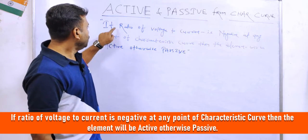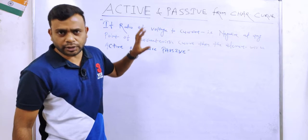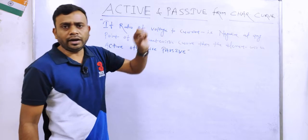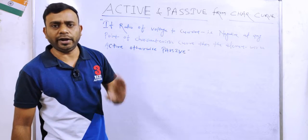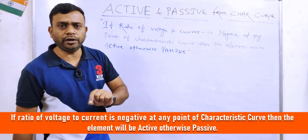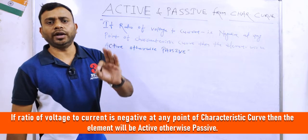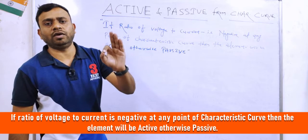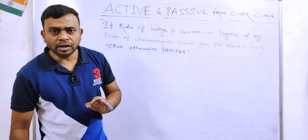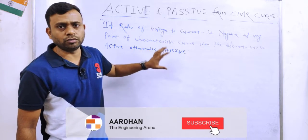क्या लिखा है? If ratio of voltage to current is negative — यदि voltage और current का ratio negative आ रहा है at any point of the characteristic curve — characteristic curve के किसी भी point पर यदि V by I ratio negative आ रहा है, मतलब वो curve बना हुआ है एक active nature वाले element से। यह हमारा important concept है, इसी को mind पे रखना है और इस type के जो भी problems examinations में आते हैं, इस concept से solve करना है।